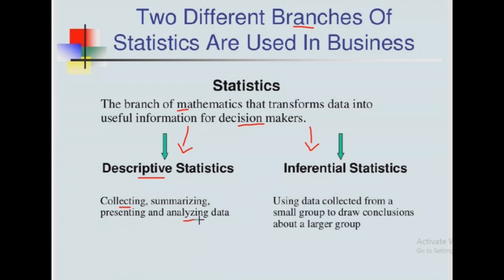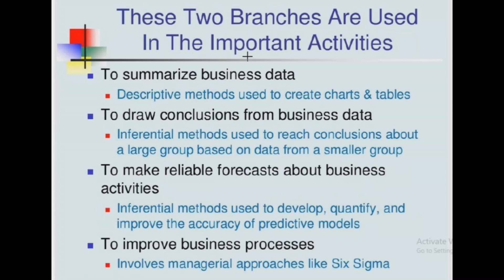The second branch is inferential statistics. We use this branch to draw conclusions from a small group of information — from the sample — to the large group of a population. In inferential statistics, we first collect data from a small group, estimate the sample statistics, then draw the overall conclusion to the wider population.